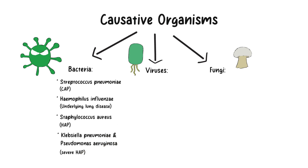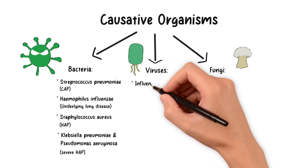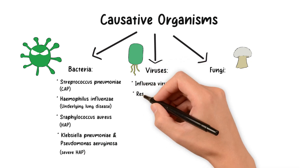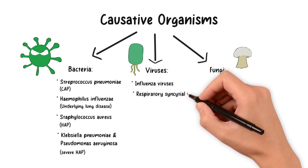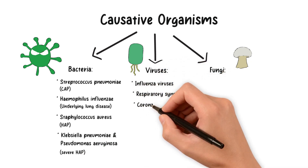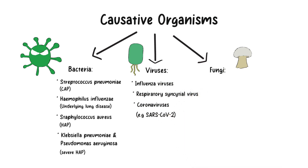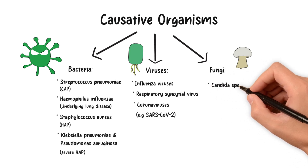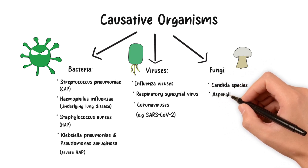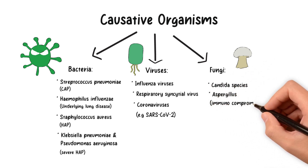Viral pneumonia is mainly caused by influenza viruses, respiratory syncytial virus, and coronaviruses like SARS-CoV-2. Fungal pneumonia is less common and predominantly affects immunocompromised individuals; examples include Candida species and Aspergillus.